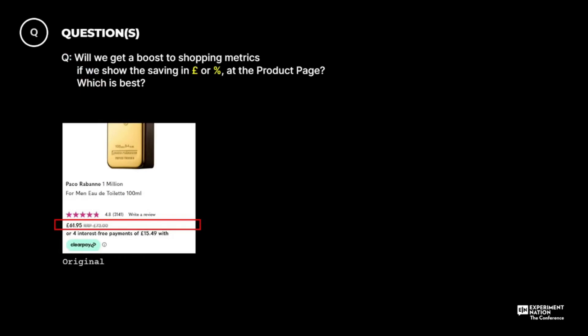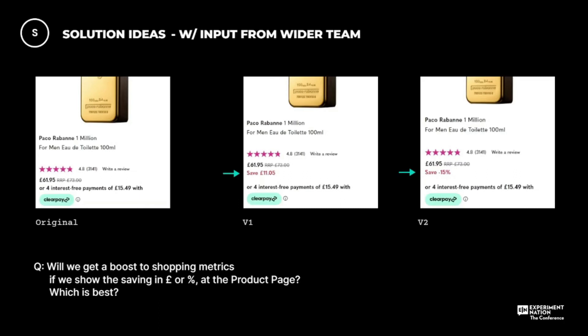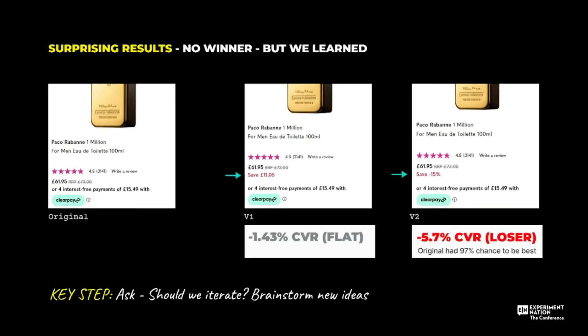Queue question: will we get a boost to conversion rate — shopping sale conversion rates — if we actually show the saving in pounds or show it as a percent at the product page, and which is best? The solution: a very basic test — we simply show 'save £11' or 'save 50 minus 15%.' The results were very surprising: neither of these won. But we were able to learn — they didn't work and for some reason did not resonate with our audience.